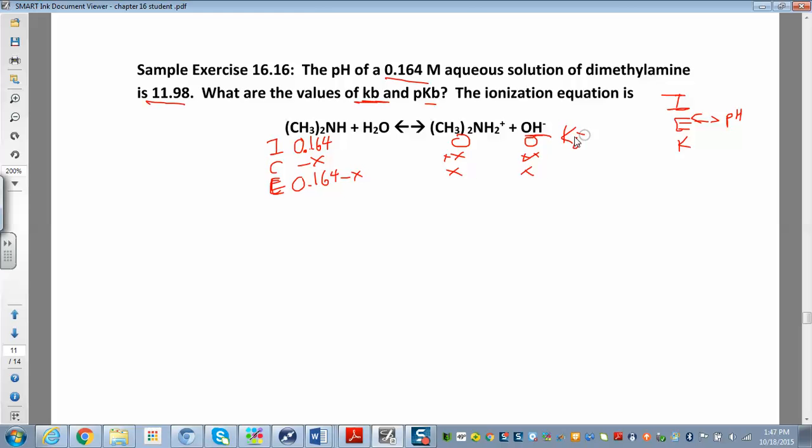We can set up our Kb expression. Kb is just going to look like our weak base here. All this stuff is (CH3)2. So that's the conjugate acid of the weak base. We have our hydroxide ion concentration, all of that over our weak base, (CH3)2NH. Now, if I knew what the Kb was, I could just put all of this stuff in here and solve for X. But I don't know what the Kb is. That's what I'm trying to find. So that means I must know X. Somehow, I have to know what that X is. I must know what the hydroxide ion concentration is.